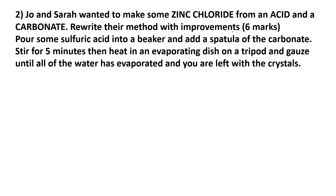Here's another way that the examiners might ask you a six-mark question about the required practical. Joe and Sarah wanted to make some zinc chloride from an acid and a carbonate. Rewrite their method with improvements. Their method says: pour some sulfuric acid into a beaker and add a spatula of the carbonate, stir for five minutes, then heat in an evaporating dish on a tripod and gauze until all of the water has evaporated and you are left with the crystals. The first thing we need to realize is they're using the wrong acid — to make zinc chloride they need to use hydrochloric acid. And the carbonate they'll need to use is zinc carbonate if they want to make zinc chloride.